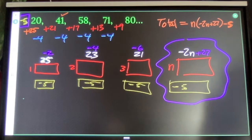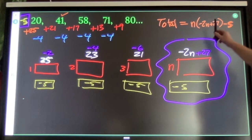So if I want to find the 10th term, I will do 10 times negative 20 plus 27. So we have 10 times 7. 70 minus 5 is 65. 10th term is 65.